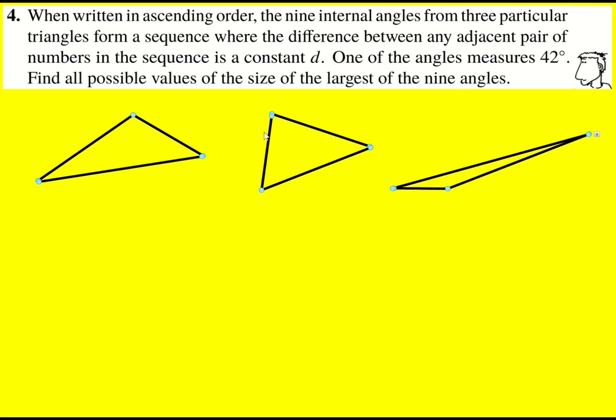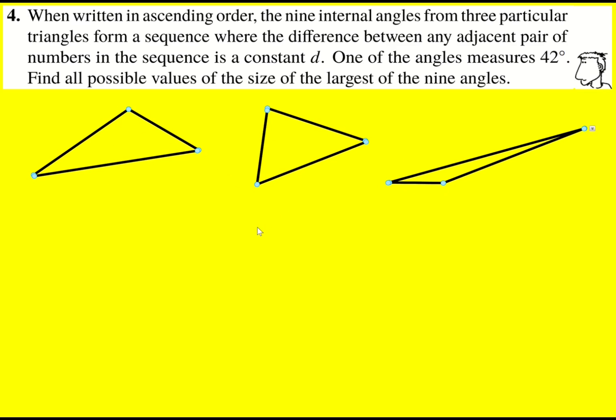We have three triangles and hence nine internal angles. We're told these angles form a sequence where the difference between any adjacent pair of numbers in the sequence is a constant d. That's another way of saying it's a linear sequence, such as 7, 12, 17, 22. This is a sequence that goes up in fives.